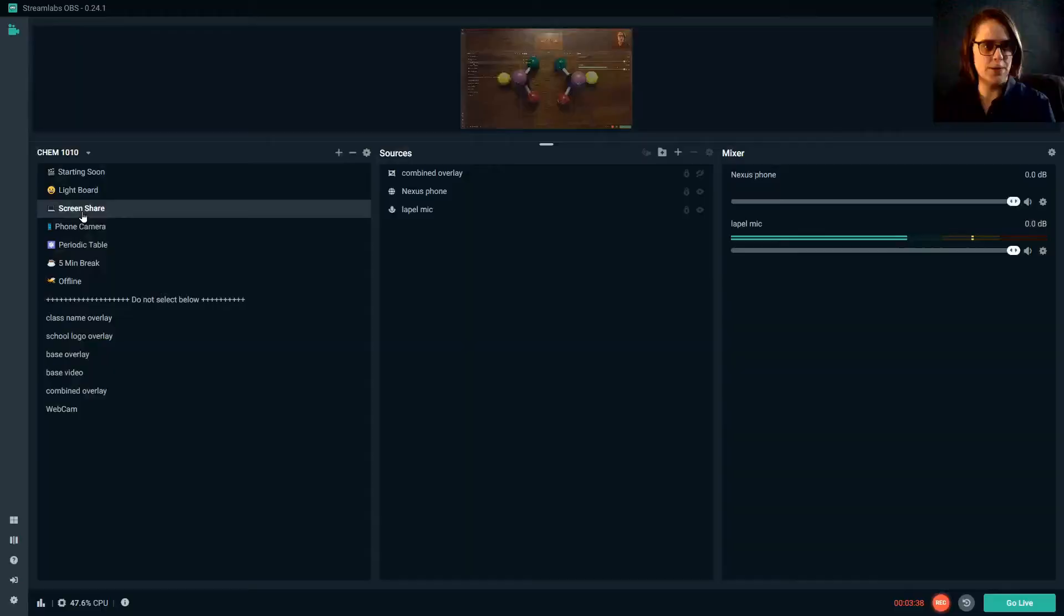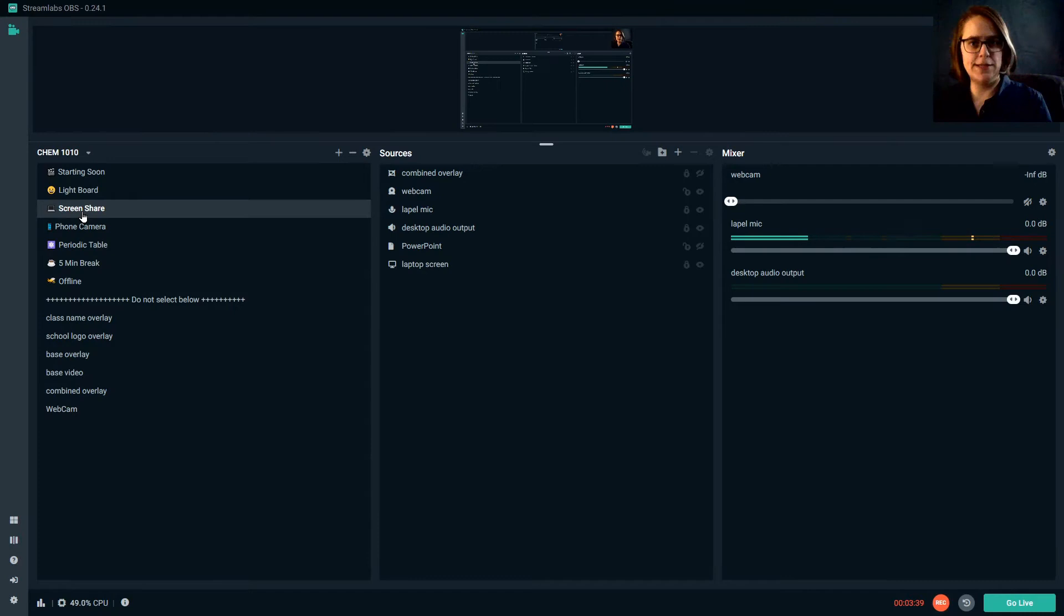And going back to my shared screen. Other options I have. Periodic table that would just show an image of the periodic table as my shared screen. I teach chemistry. Five minute break. This is not something I have made use of, but it's a timer that counts down from five minutes. Offline, this is similar set up to my starting screen. It's just a message that says class has ended and turns my microphone off. So next I am going to go back to my light board and talk a little bit more about my light board.